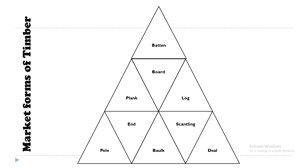Next is log — a trunk of a tree with all branches and leaves removed. Next is pole, a form of timber having a diameter less than 200 mm. End is a small portion of all market forms. Bulk is a roughly square timber beam after removing the sapwood and bark; one dimension is greater than 50 mm and the other dimension is greater than 100 mm.